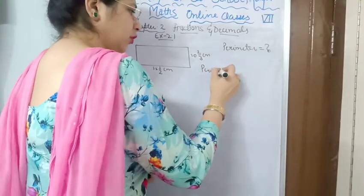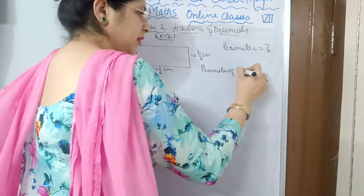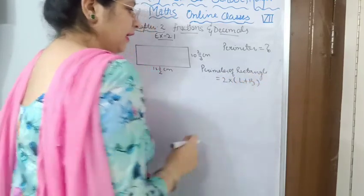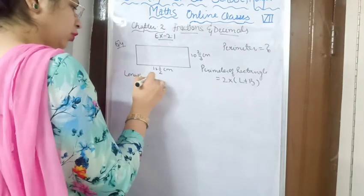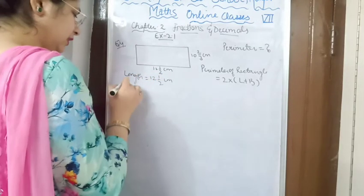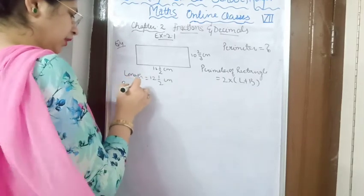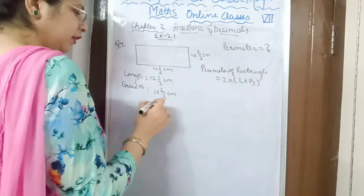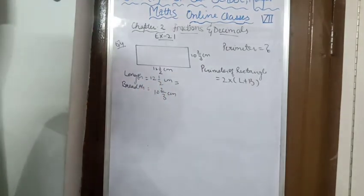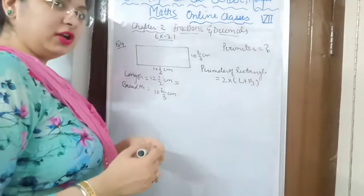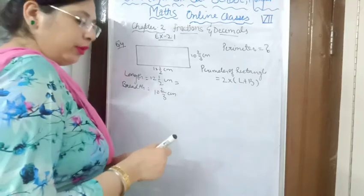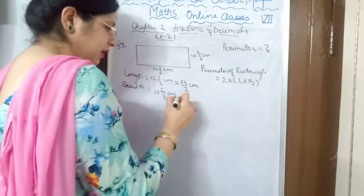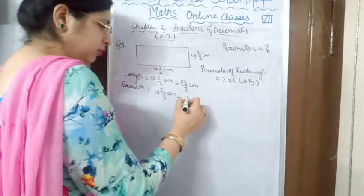Perimeter of rectangle — you all know the formula, which you have studied in previous classes — is equal to 2 multiplied by length plus breadth. Here, length is 12½ cm and breadth is 10⅔ cm. It will be better if you convert these mixed fractions into improper fractions. Multiply denominator with the whole number: 2 into 12 is 24, plus numerator 1, gives 25 upon 2 cm. Similarly, 3 into 10 is 30, plus 2 is 32 upon 3 cm.